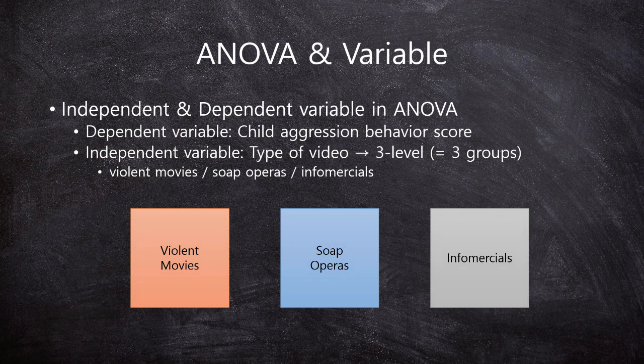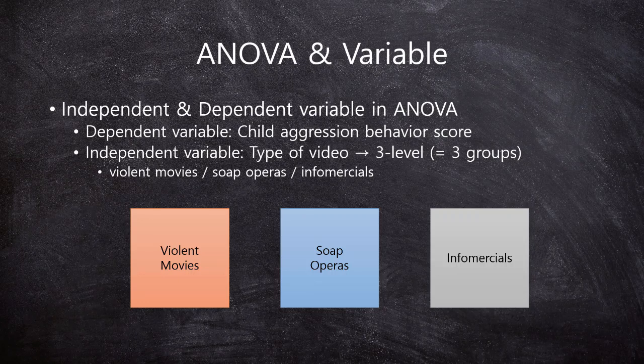If you want to test one-way ANOVA, you have to identify what is the dependent variable and what is the independent variable. The dependent variable should be continuous and the independent variable should be a categorical variable. This is very important. If not, one-way ANOVA cannot be used — it's not working.